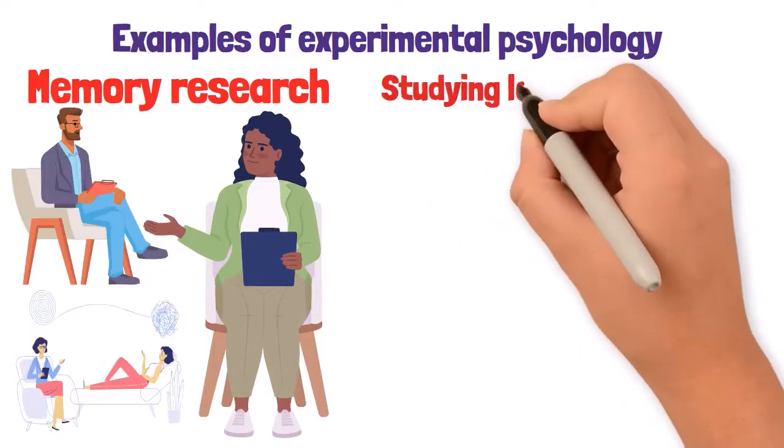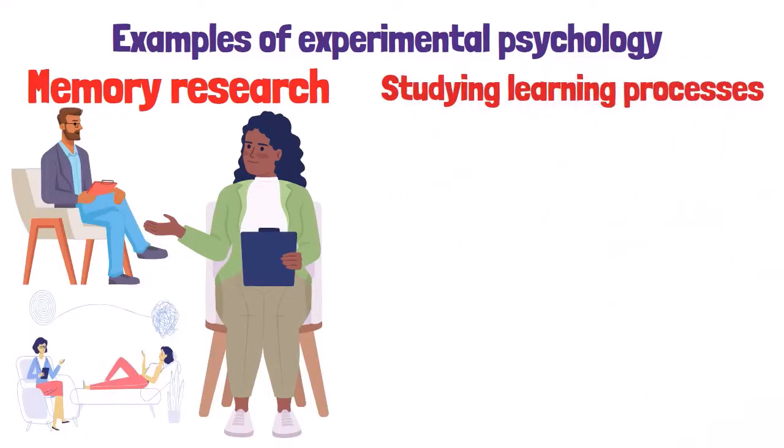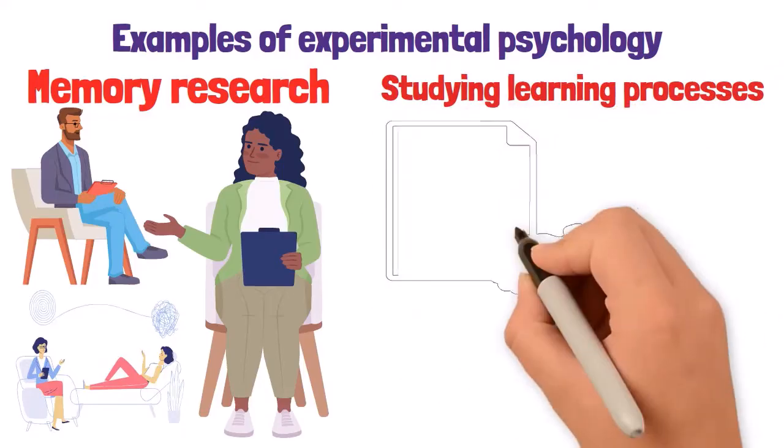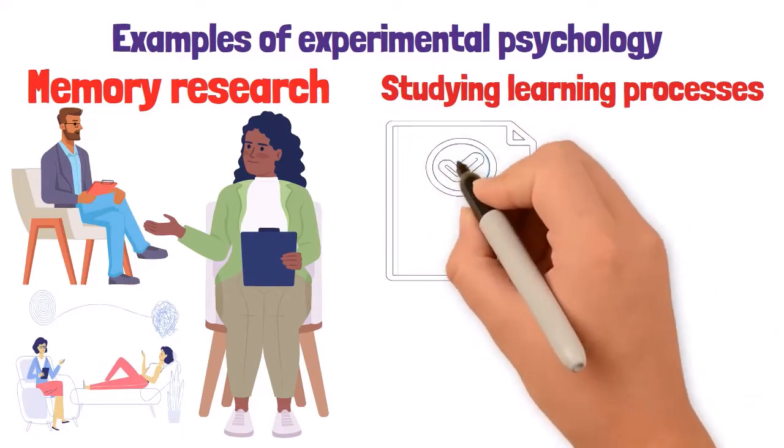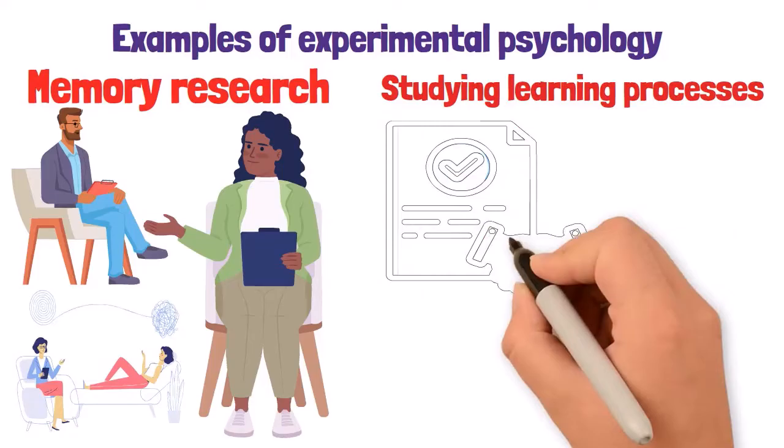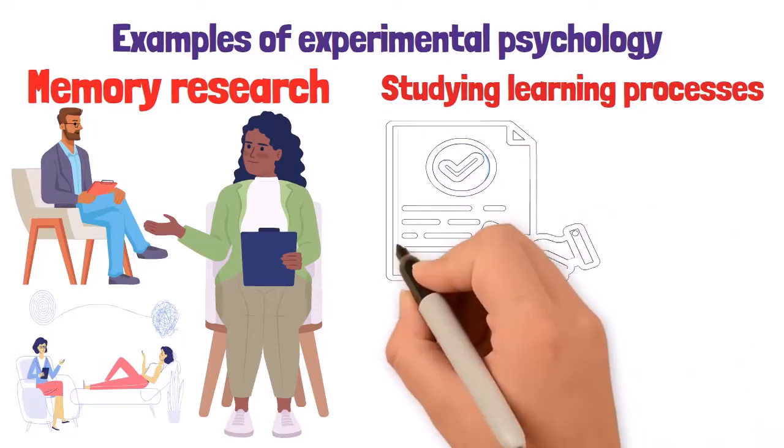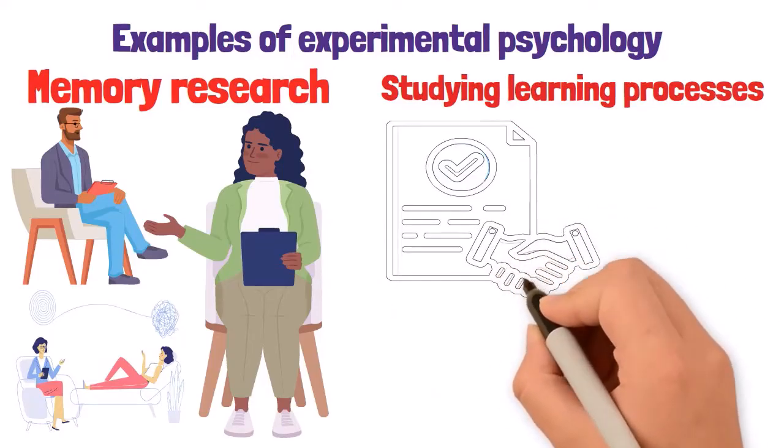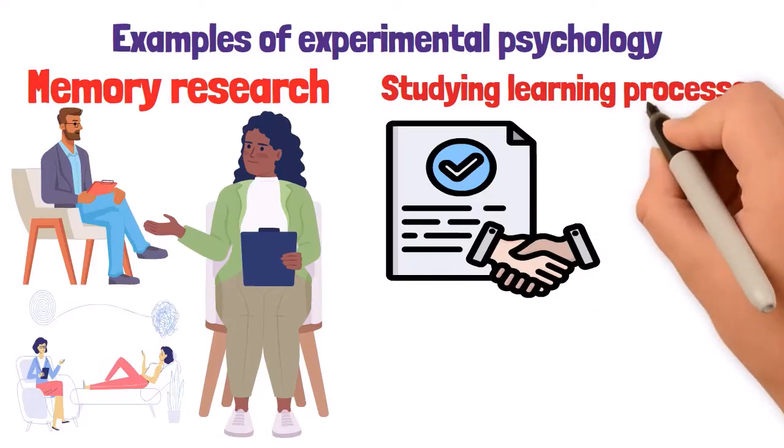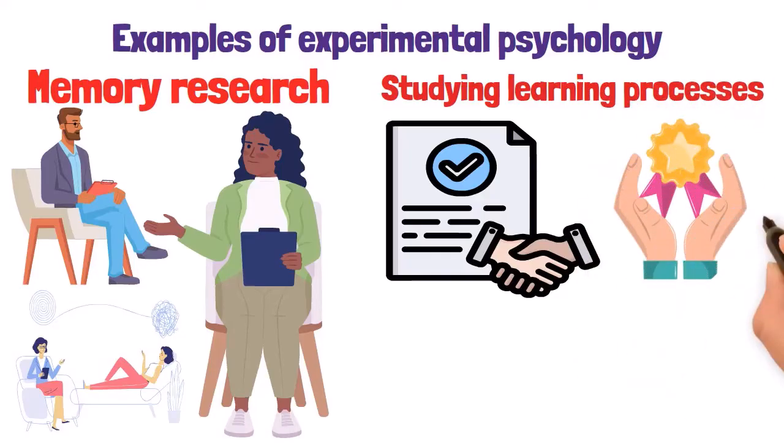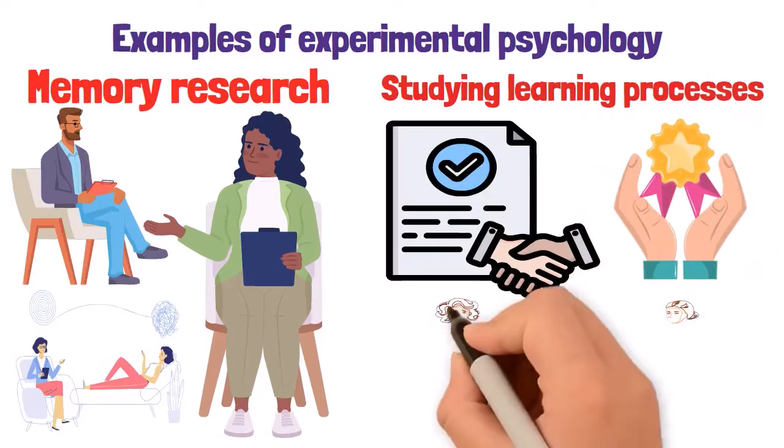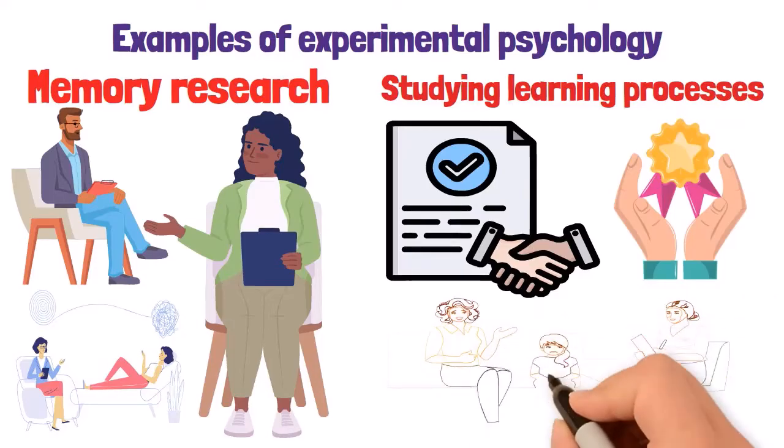The second example involves studying learning processes. A psychologist might explore the effects of reinforcement on behavior. In an experiment, participants could be asked to complete a task with varying levels of rewards for correct answers. By analyzing how different reward systems influence task performance, the researcher can understand how reinforcement shapes learning and behavior.